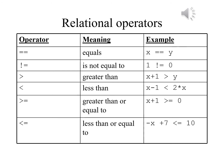Exclamation point equals, frequently referred to as 'bang equals,' means not equal to — and we know that 1 is not equal to 0. Greater than and less than signs are exactly what you learned in algebra. The wider end is for the greater value; the point is toward the smaller of the two values.